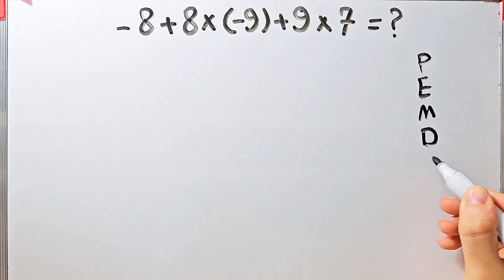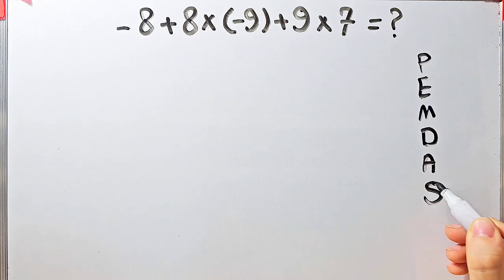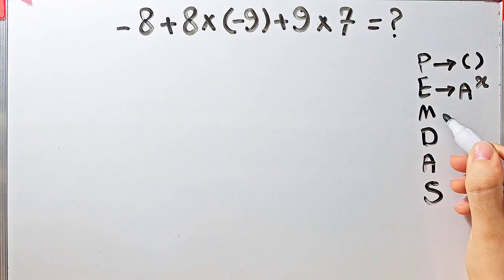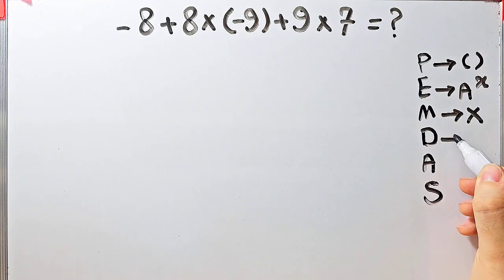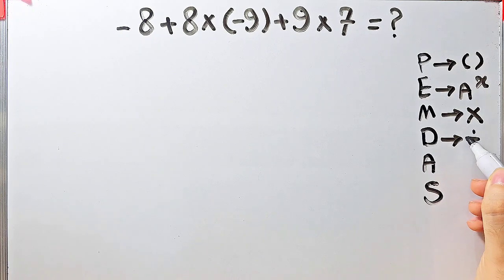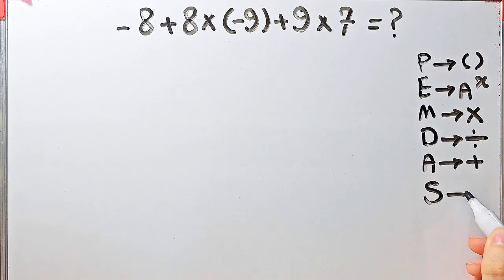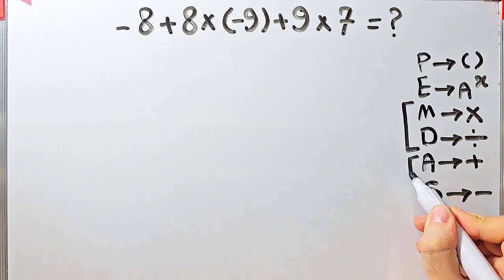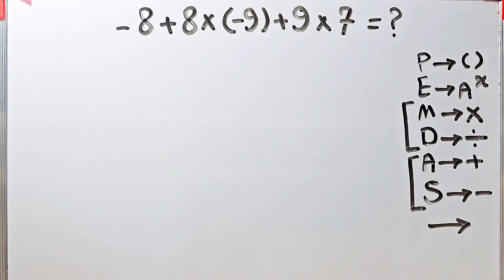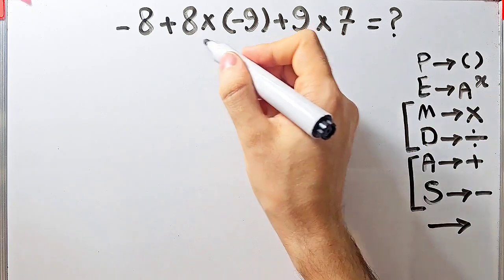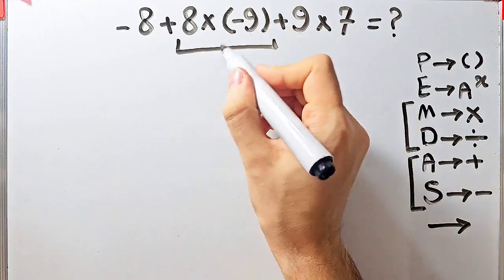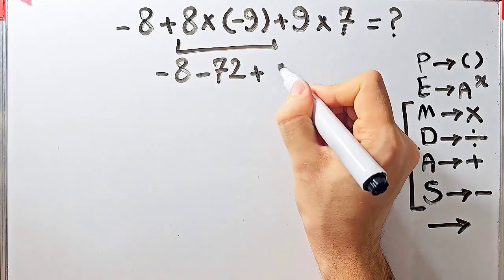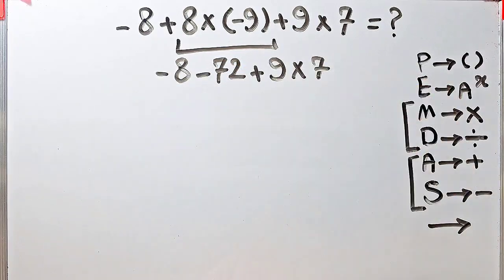To solve this question we need to follow the PEMDAS rule. P stands for parentheses, E for exponent, M for multiplication, D for division, A for addition, and S for subtraction. Multiplication and division have the same level of priority; addition and subtraction also have the same level of priority. According to PEMDAS, first we simplify the multiplication: 8 times negative 9 equals negative 72. Now we have negative 8 minus 72 plus 9, then times 7.